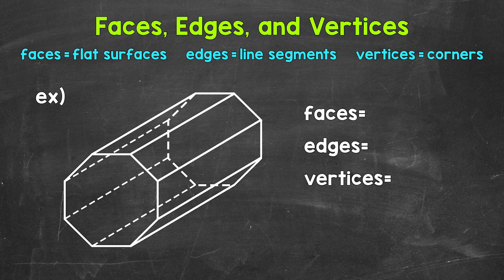Let's start with identifying and counting the number of faces, so the flat surfaces that make up this octagonal prism. Let's start with the face in the front here. So we have one, and then we have a face in the back, that's two. Now let's go around the prism.